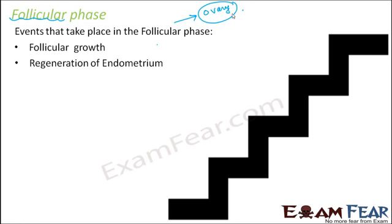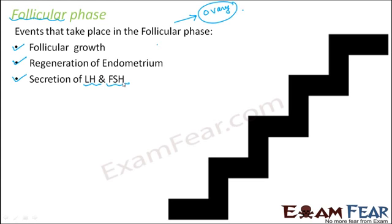Another event is regeneration of the endometrium. During menstruation the endometrium broke down, and now it has to rebuild itself — that rebuilding is called regeneration of endometrium, and it happens as part of the follicular phase. Also, LH (luteinizing hormone) and FSH (follicle stimulating hormone) are secreted and play a very important role. Finally, ovulation also occurs during the follicular phase.